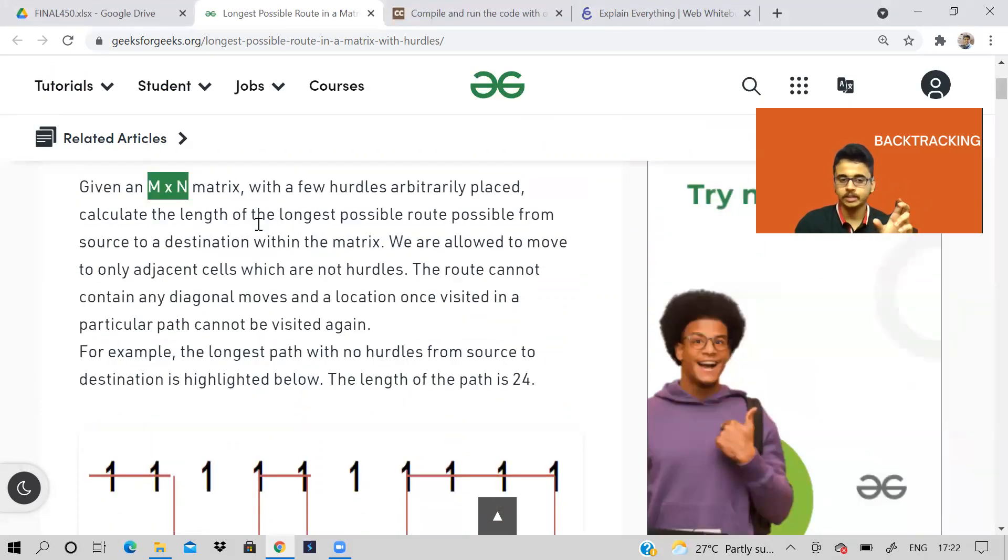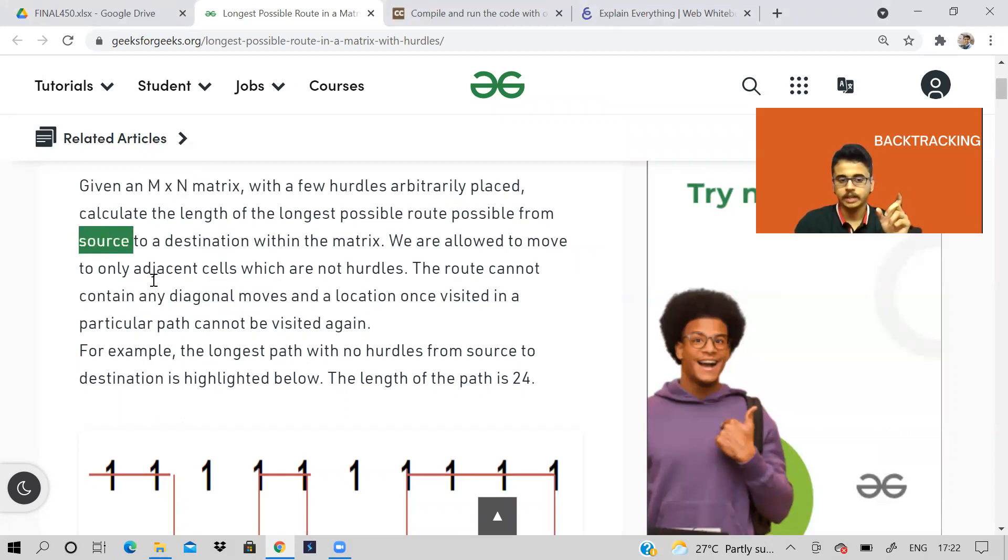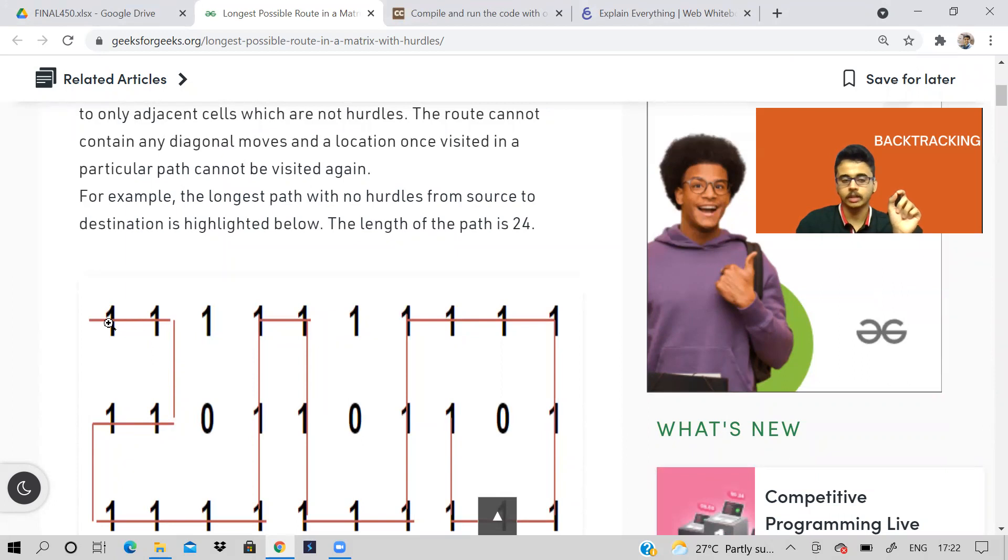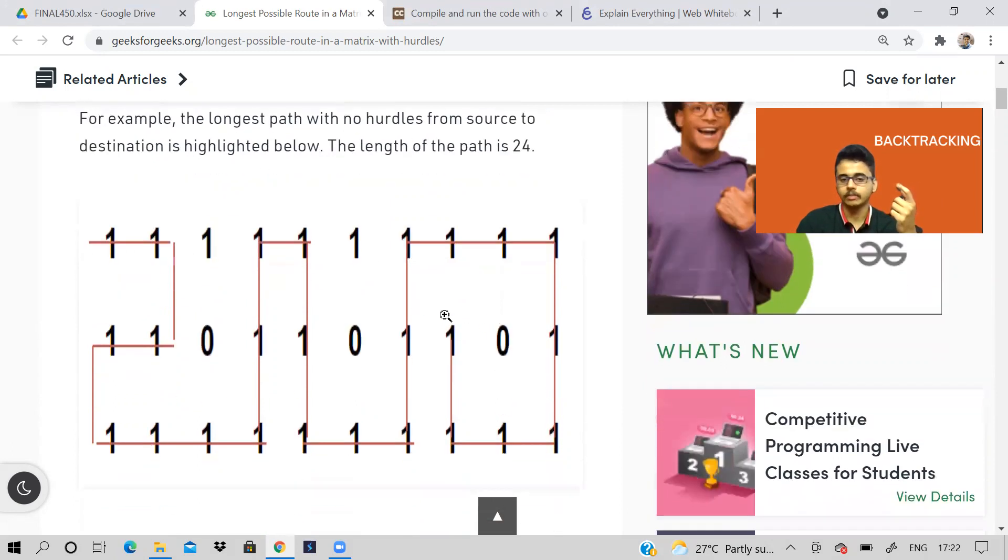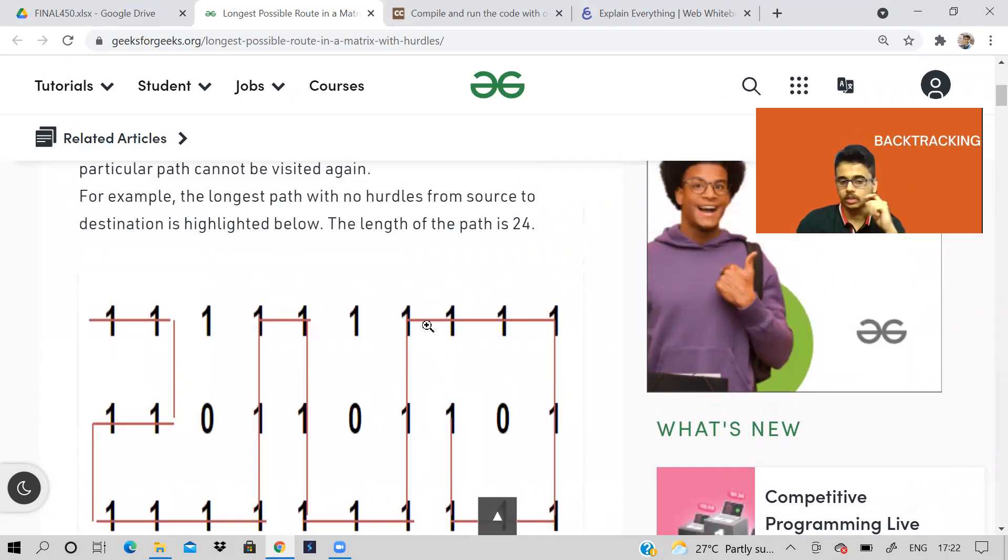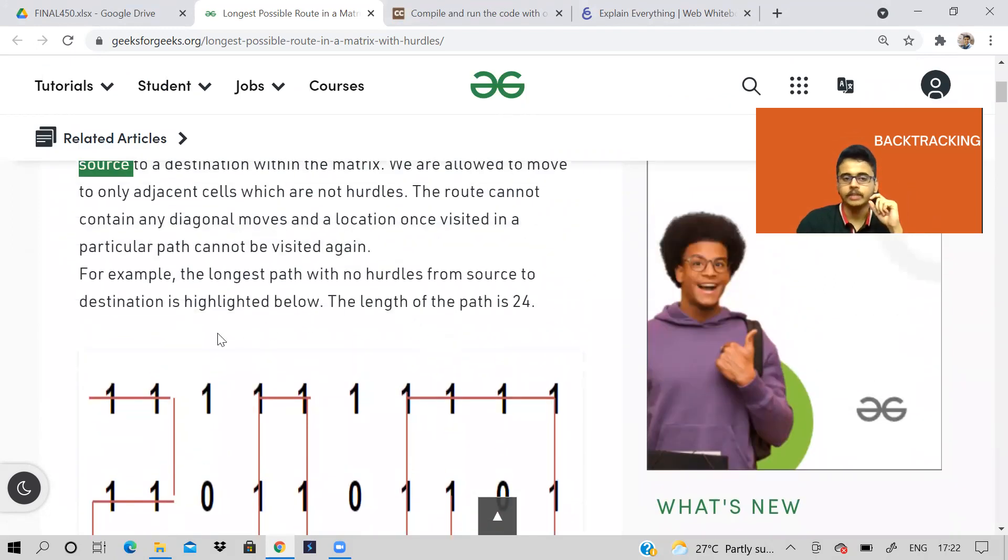So whichever cell has zero value, you cannot visit that cell because it is a hurdle. You cannot travel through that cell. And one means it is a freeway. So matrix we are given and then we are also given a source that is from which cell are we starting. Like for example, from the zero row first column like that. And destination cell, we have to reach suppose second row, tenth column like that. So that is what we are given and we have to tell longest possible path.